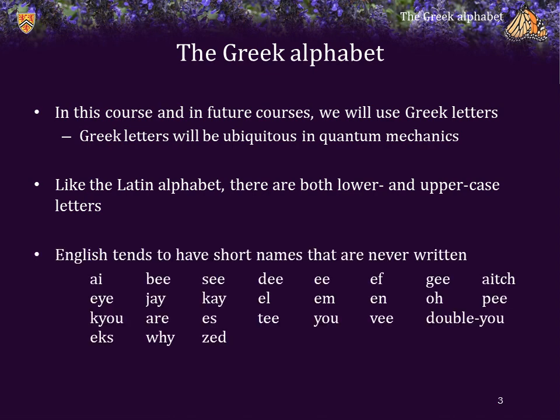Now, English letters tend to have very short names that are never written. Greek letters, however, are given names that are multisyllabic.